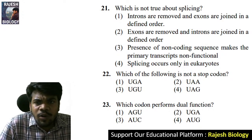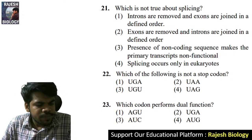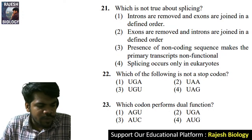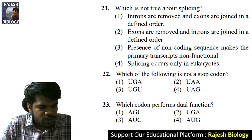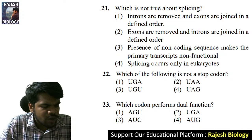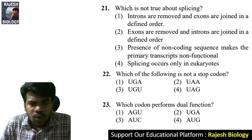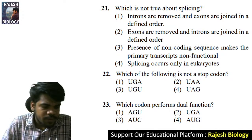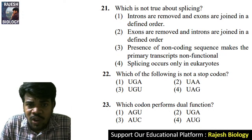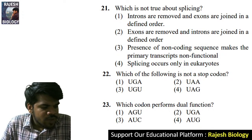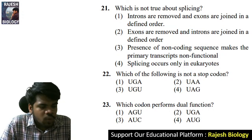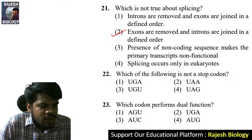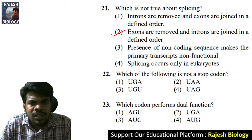Question 21: which is not true about splicing? Introns are removed and exons are joined in a defined order — this is true. Exons are removed and introns are joined in a defined order — this is false. The right answer is option two. Jnaneshwari and Aparna Patipanda, you both are correct.